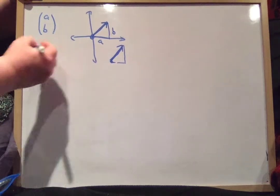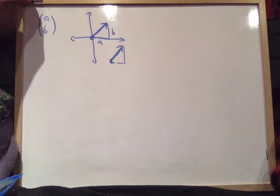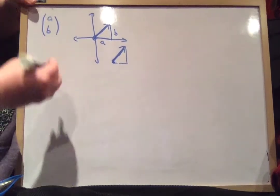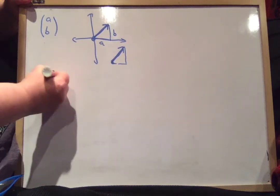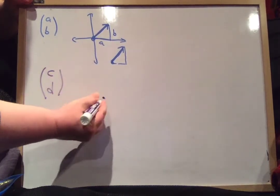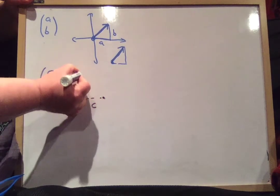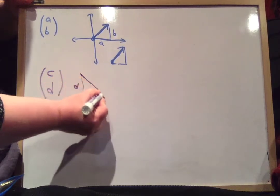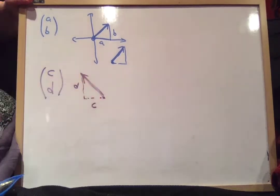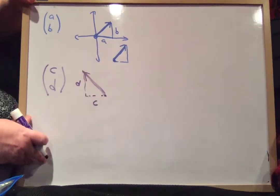Now, suppose you have another vector (c, d), and your other vector (c, d) is pointing in a different way. Suppose we have a vector (c, d) — it starts somewhere, goes over by c (maybe c is a negative number), and up by d. There is vector (c, d). If c is a negative number, it goes to the left. So everybody knows this already.